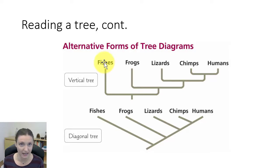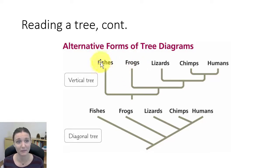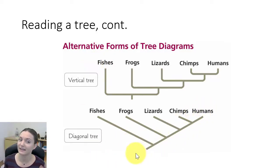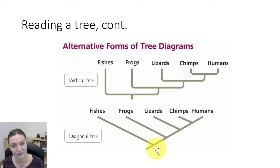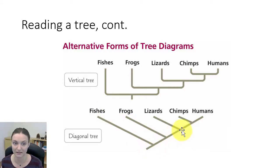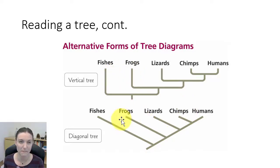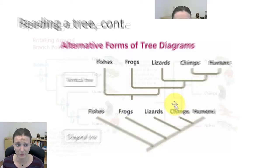Fish are what we call the basal taxa — sometimes called the outgroup. They're the group that shares the least amount of characteristics with the rest of the tree. Whether drawn diagonally or otherwise, those split points are just branch points representing the most recent common ancestor of that group. Ancestral lineage, split, common ancestor — one group went off to fish, the other lineage continued and split again and again. These are showing evolutionary relationships, and what matters is the branching pattern.